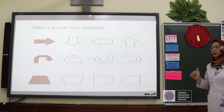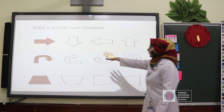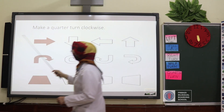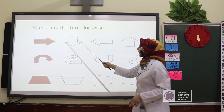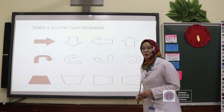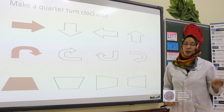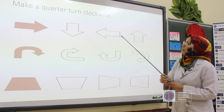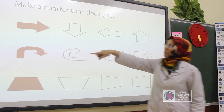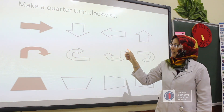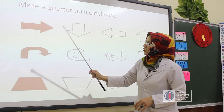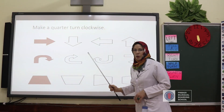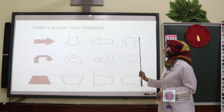Now we will do practice together. Look at the screen — we have an example here. Look at the first shape: make a quarter turn clockwise. Today we will do not only quarter turn, not only clockwise. Clockwise means turning to the right side, so these shapes will turn to the right side and will be a quarter turn.